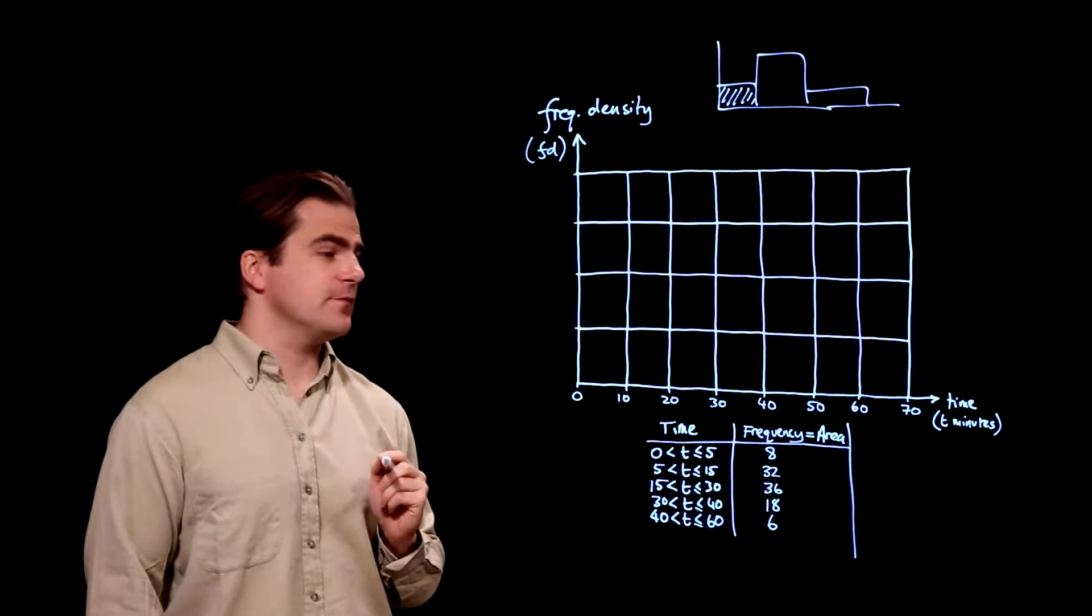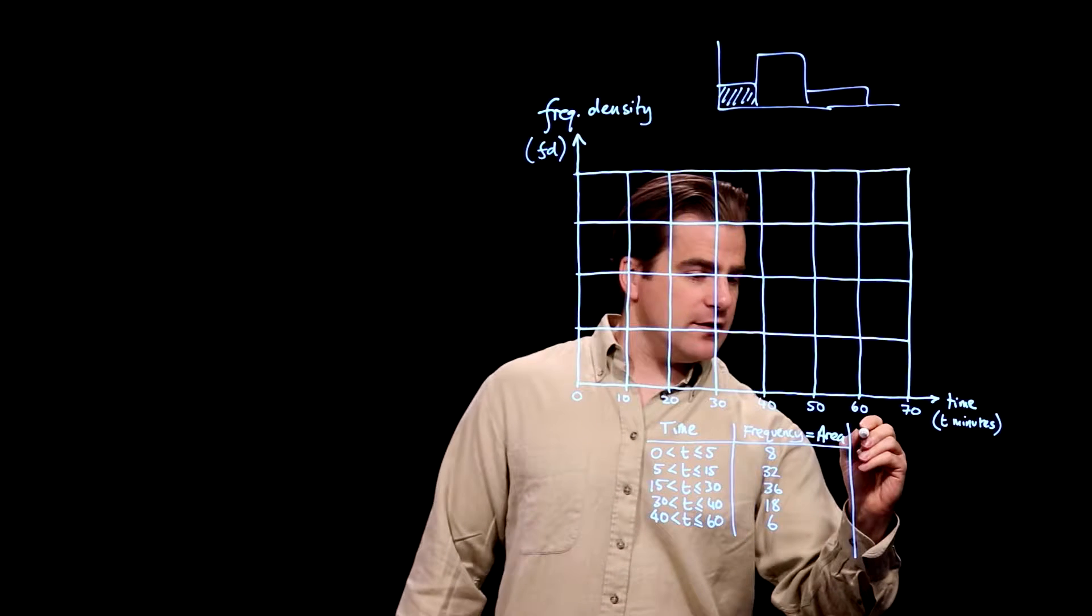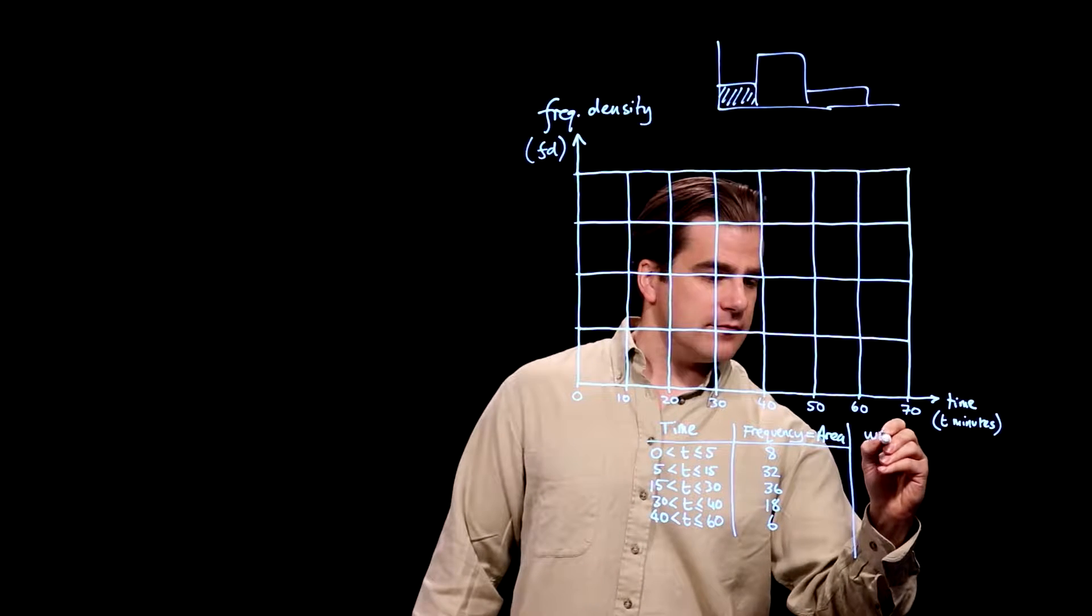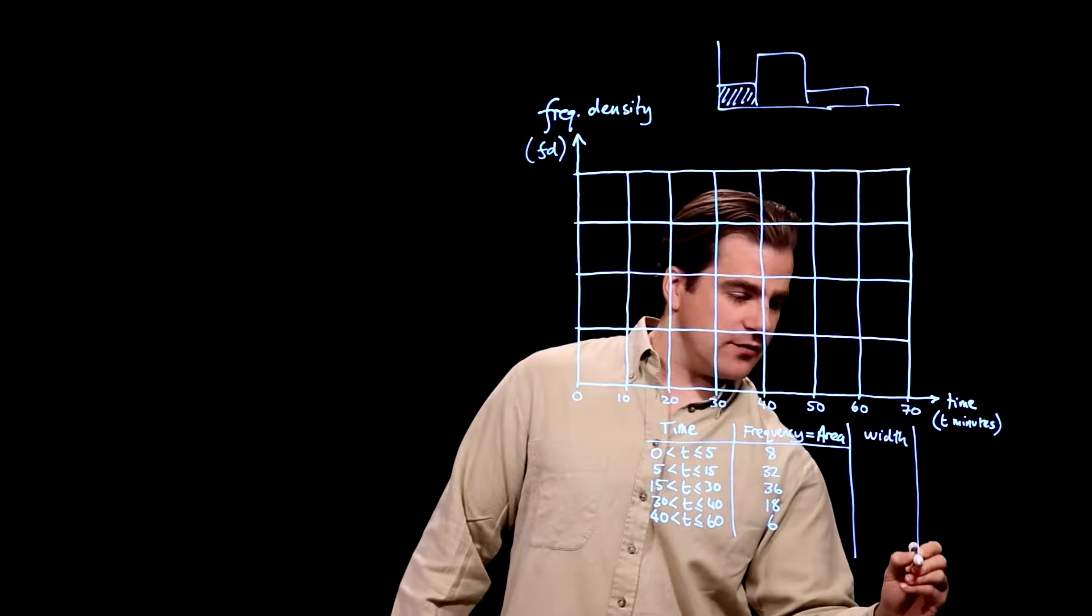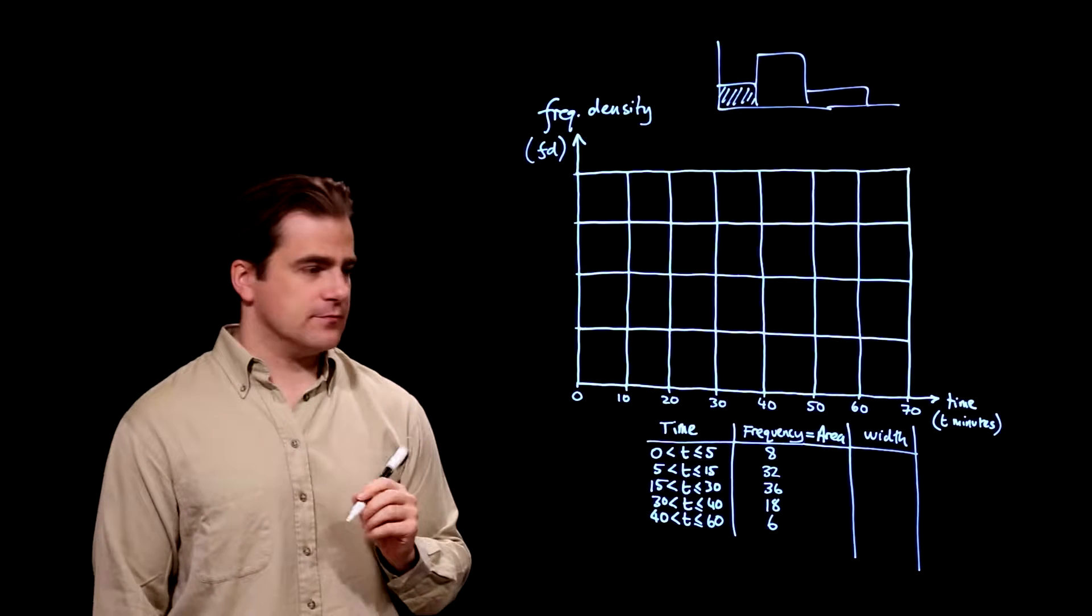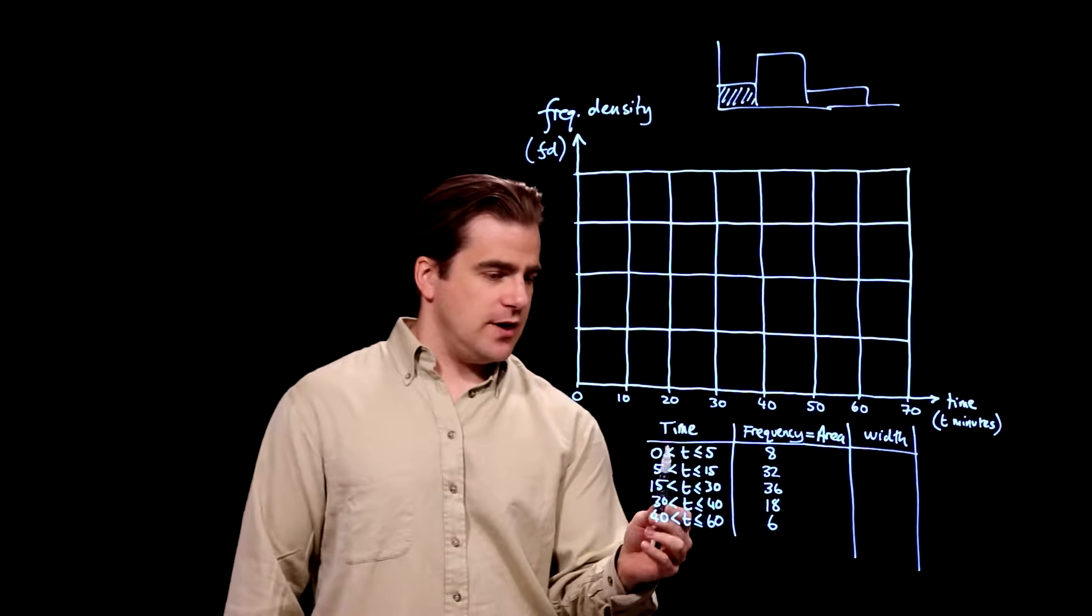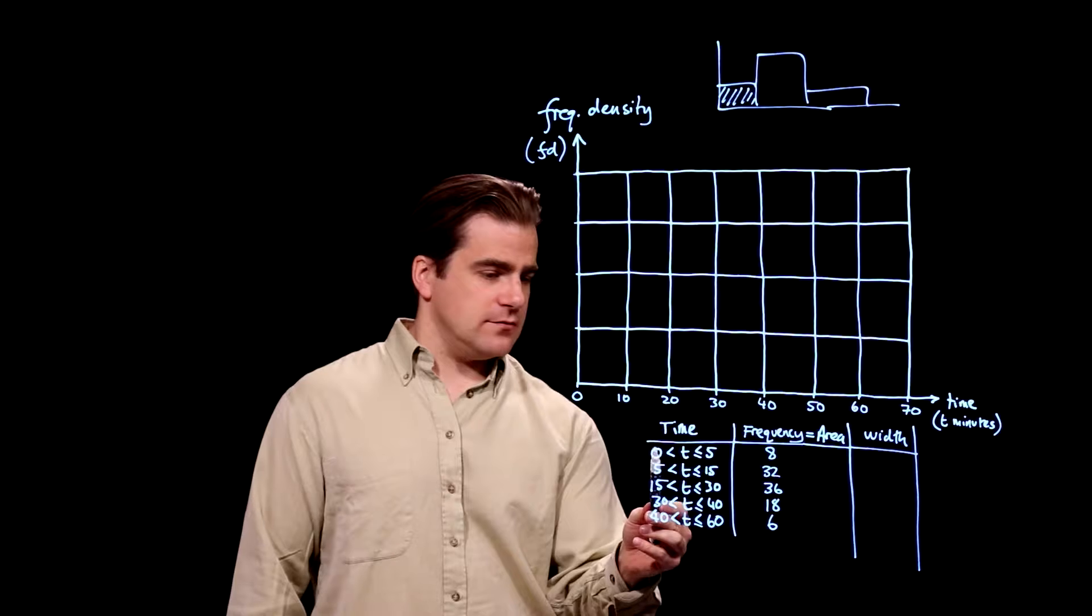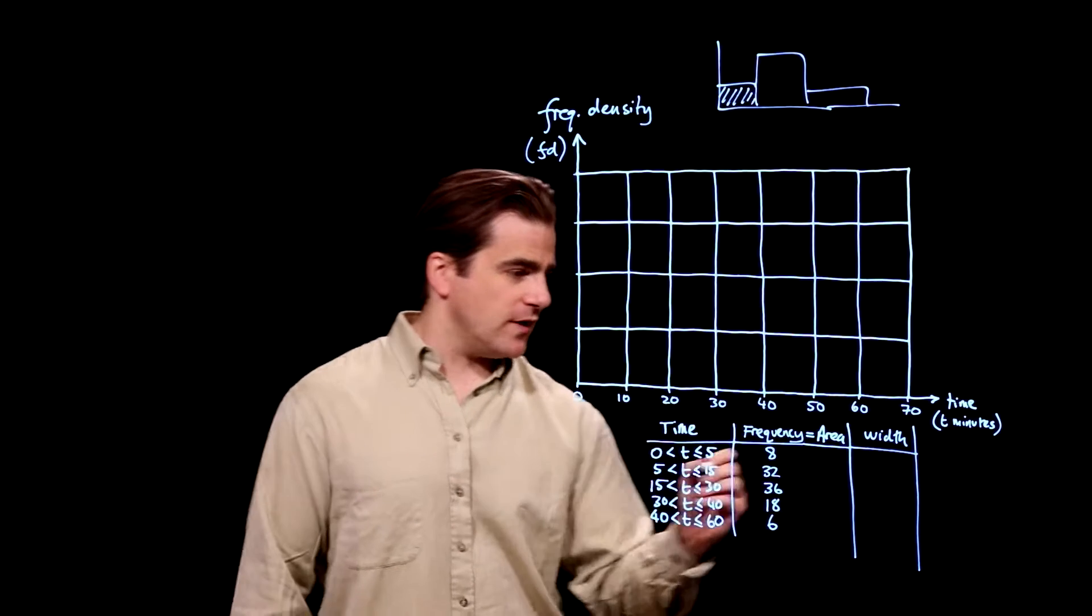Third thing, we need to know the width of each box that we're going to plot. So add a width column. And the width is, well, from there to there. So 0 to 5, the width is 5.